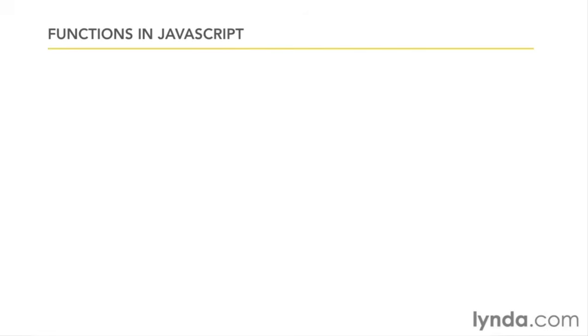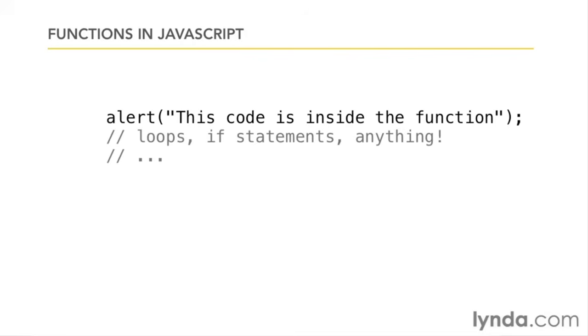And the way that we create them in JavaScript is that we take the code that we want to enclose, whether that's one line, ten lines, or a hundred, we surround it with curly braces to create a code block to say where this function starts and where it ends.